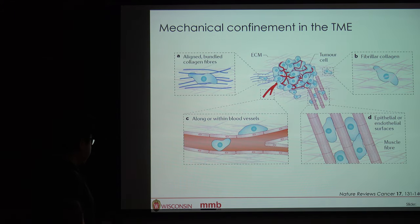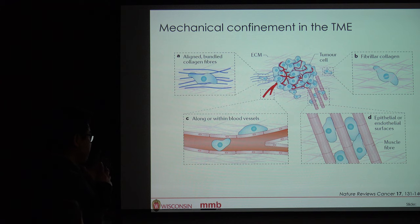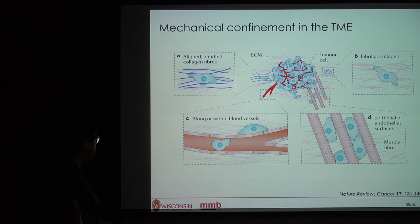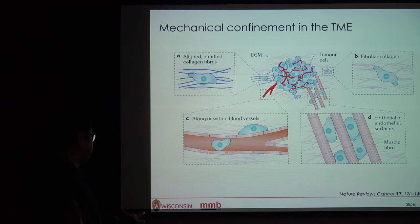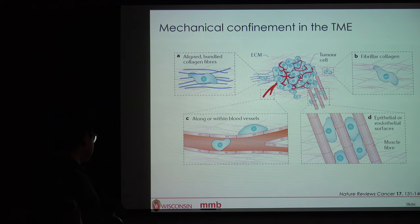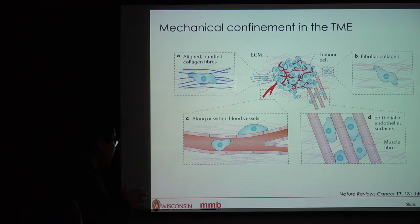In a little more detail: what is mechanical confinement? It's really just the restriction of a cell due to a physical surface. Some examples are aligned collagen fibers, where a cell can use those fibers as tracks to migrate, and fibrillar collagen in terms of density and how cells are meshed into the matrix. Cells can also use existing structures like blood vessels and lymphatic vessels to migrate within.